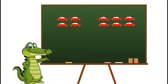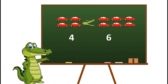Now on the left side we have one, two, three, four cars and on the right side there are one, two, three, four, five, six cars. So on which side will my mouth be closed? Correct! As four cars are less than six cars, my mouth will be closed towards the smaller number four. Hence, four is less than six.